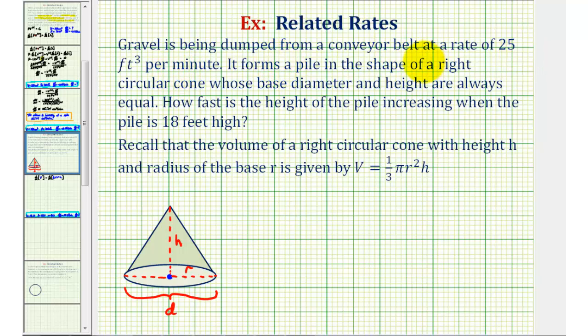Gravel is being dumped from a conveyor belt at a rate of 25 cubic feet per minute. It forms a pile in the shape of a right circular cone, pictured here.